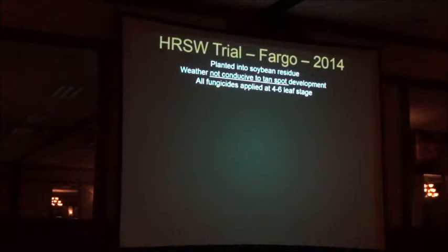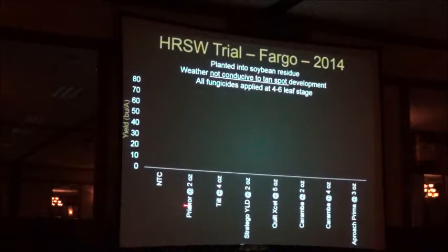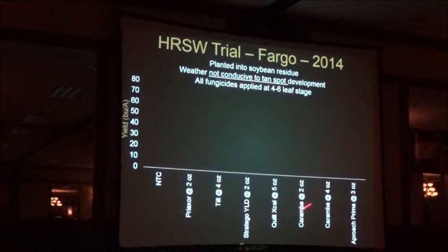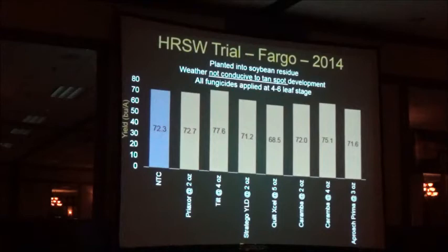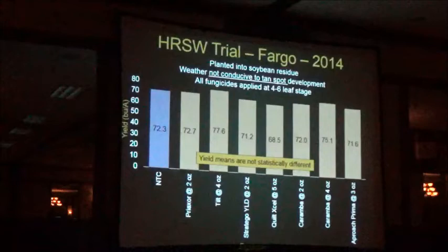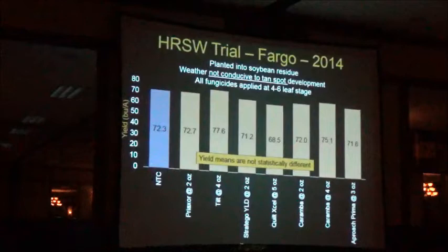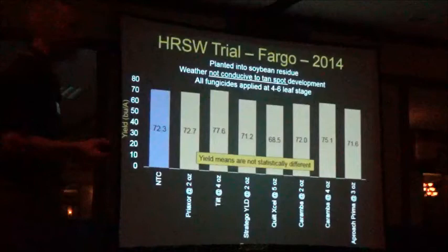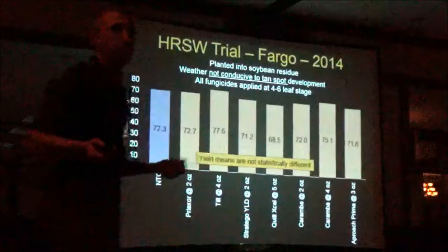Pulling data from seven trials conducted last year in Fargo, all applied at the four-to-six leaf stage, looking at non-treated versus Prosaro, Tilt, Stratego, Quilt, two rates of Caramba, and Approach Premium. In a low disease environment on soybean residue, there was no consistent yield response—some treated plots showed a slight increase, some didn't—but none of the differences were statistically significant. The key takeaway: in a low disease environment, you don't see a consistent yield response from a tillering fungicide application.